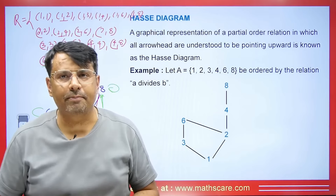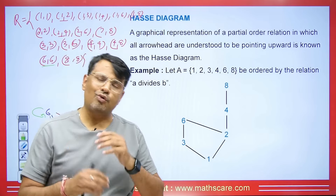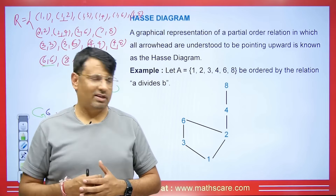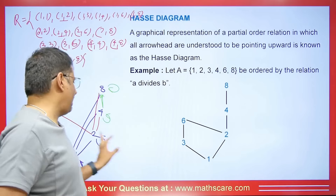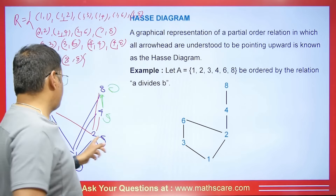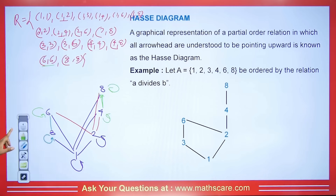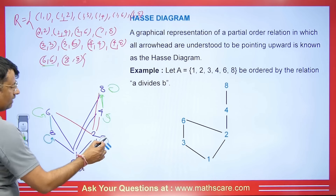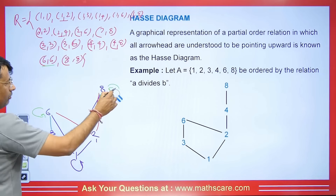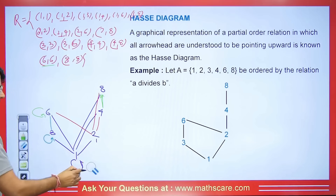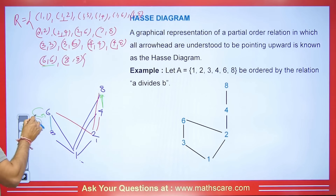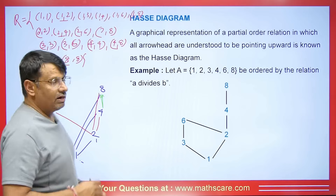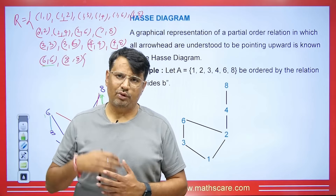To create a Hasse diagram, we need a partial order relation. The first property is reflexivity — an element divides itself. Since reflexivity is part of the definition, there's no need to show it with an arrow. We won't represent elements going over their own — it's in the definition, so we erase those self-loops.